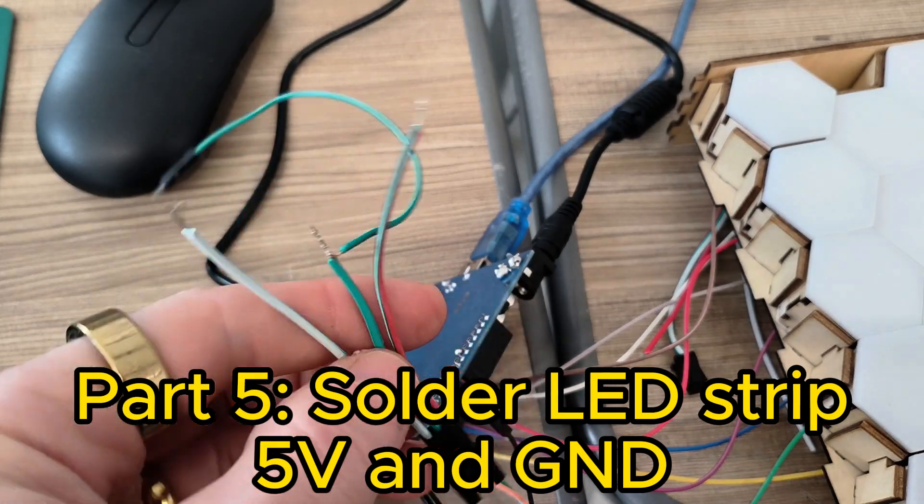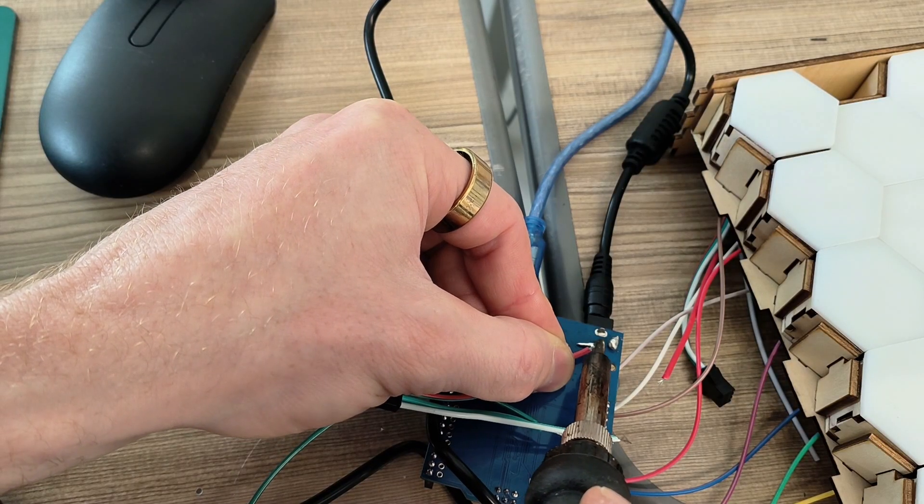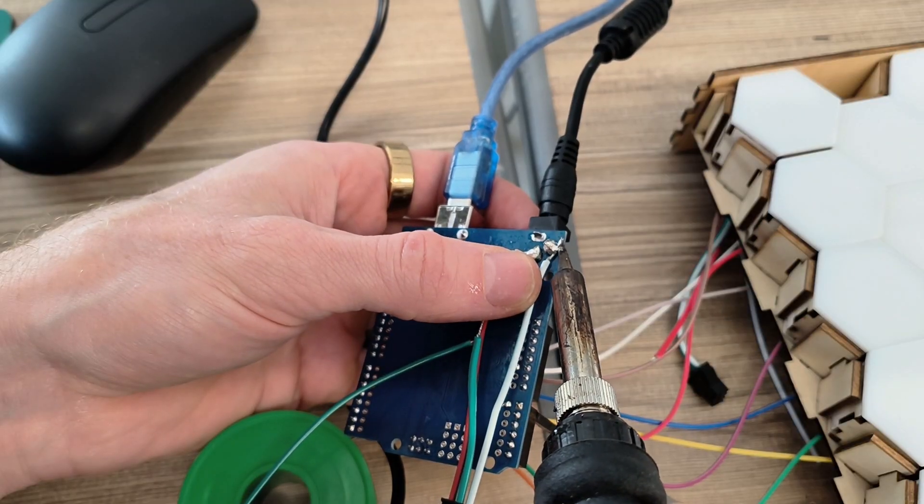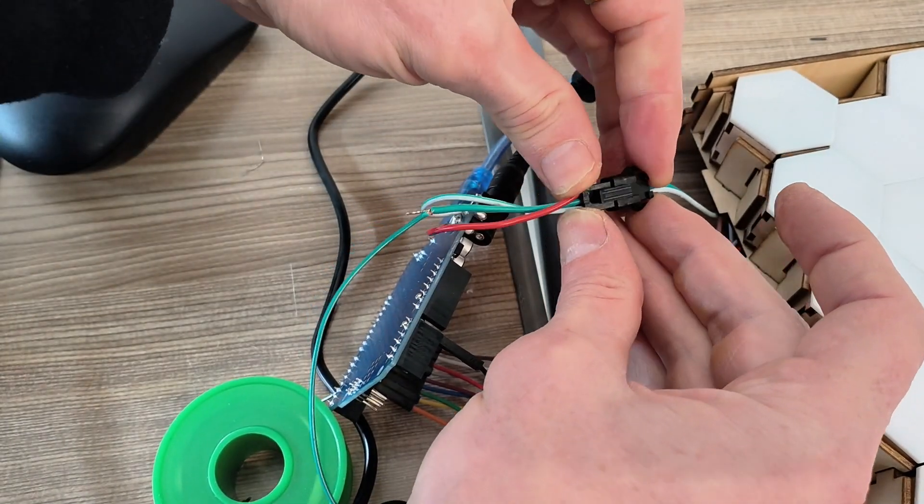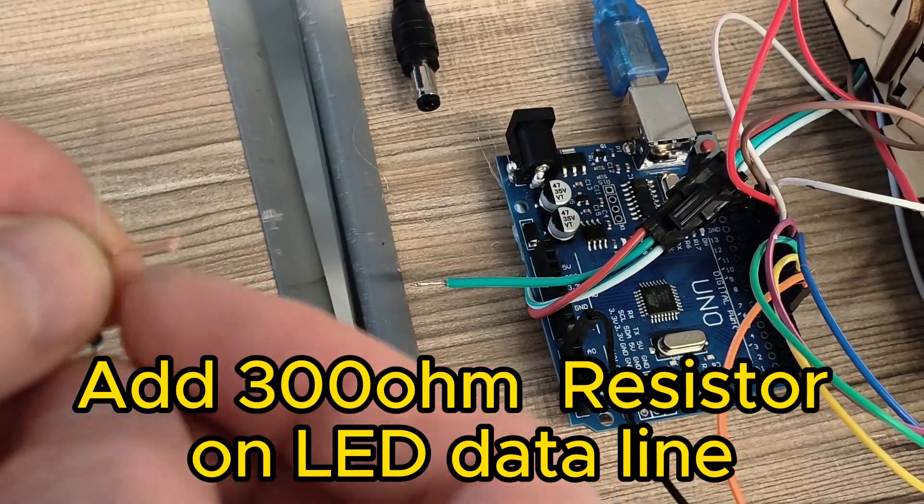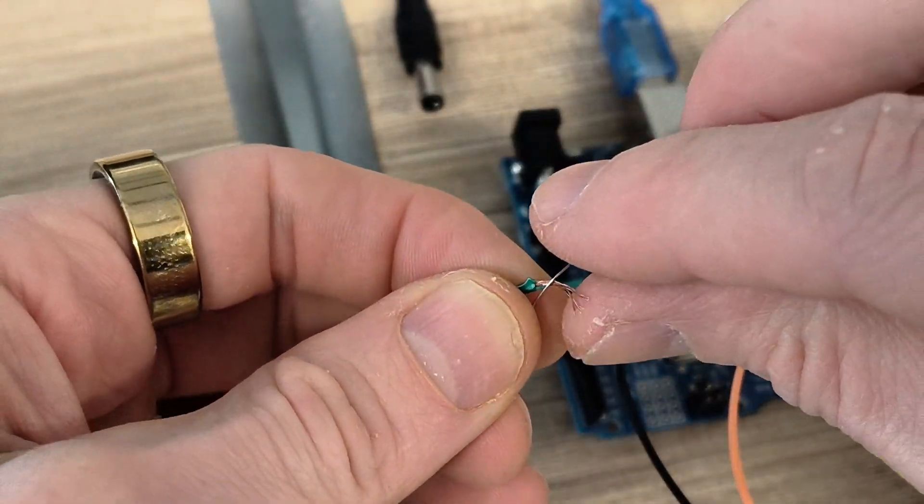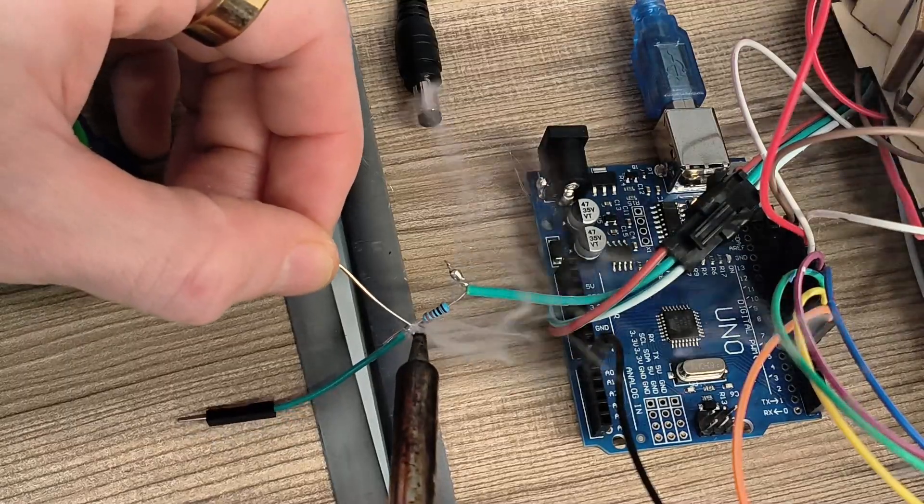We're going to solder on the power for the LED strip. The red wire is positive. And then the white one is negative. And then the middle one is the tap for our data line, which we can add a 300 ohm resistor to it.